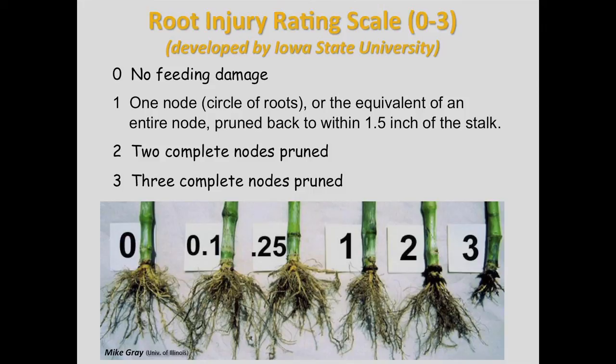A corn rootworm injury rating of more than 0.25 is equivalent to the economic threshold level. Producers should be concerned with BT-resistant problems if BT corn hybrids have a root injury rating of more than one.